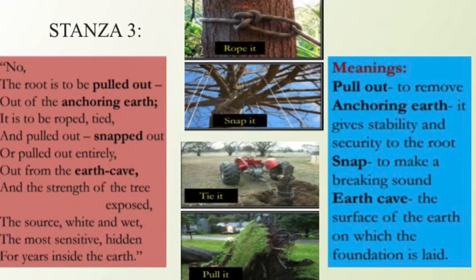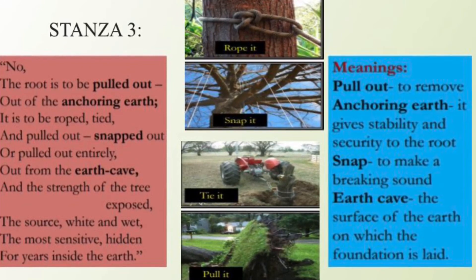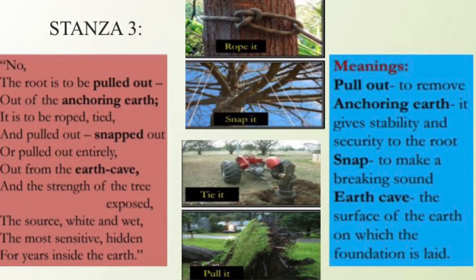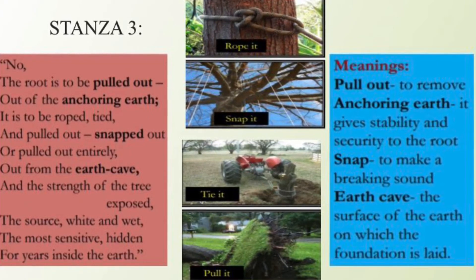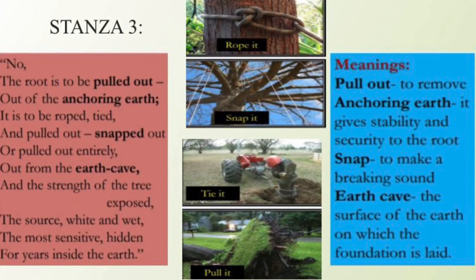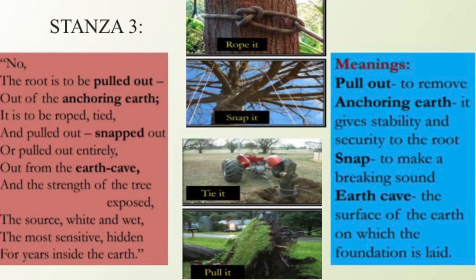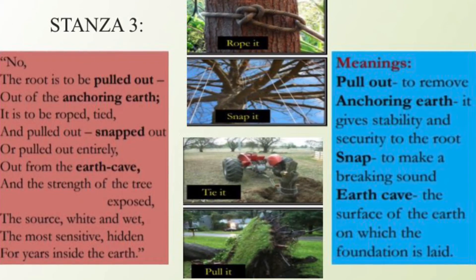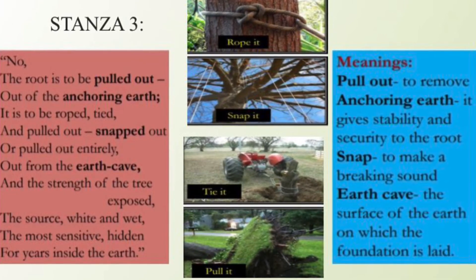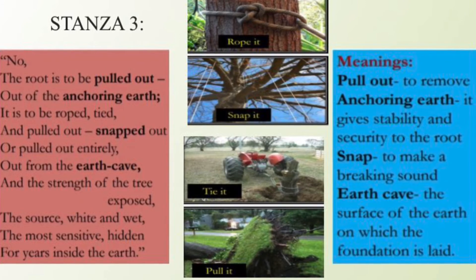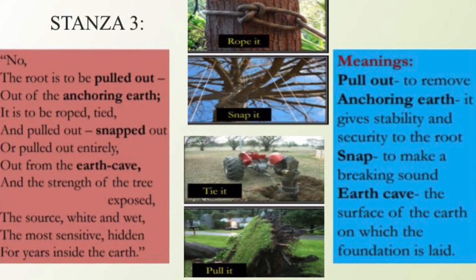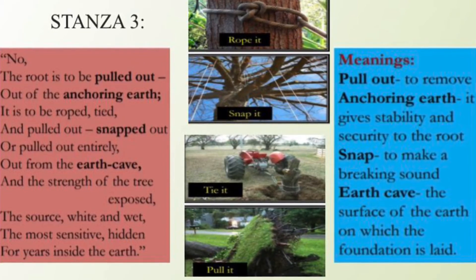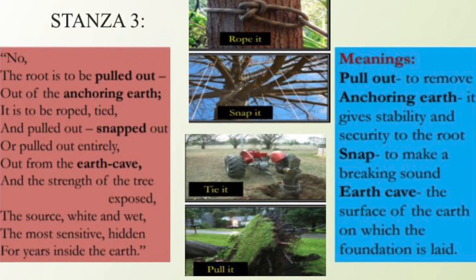In this stanza, pull out means to remove; anchoring earth means something that gives stability and security to the root; snap means a breaking sound; and earth cave means the surface of the earth in which the foundation is laid.